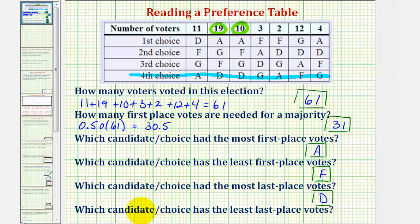And then finally, which candidate or choice has the least last place votes. Again, if there was a candidate missing from this row here, that gives us the fourth choice votes, that candidate would receive zero fourth choice votes, and therefore would be the candidate for this question. But again, every candidate does appear in this row. And notice candidate G receives 3 plus 4, or 7, fourth choice votes. And therefore, G receives the least last place, or fourth choice votes.